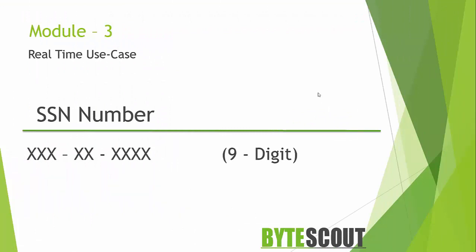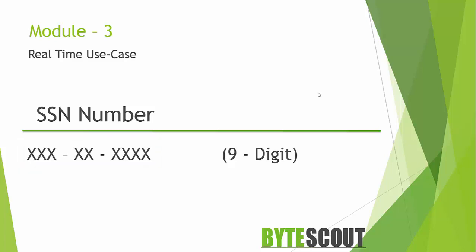Now let's move to the next demo. Suppose you need to check whether a user has entered a valid Social Security Number in your application. SSNs are 9-digit numbers in a specific format: the first 3 digits are called the area number, the next 2 digits are the group number, and the last 4 digits are serial numbers ranging from 0001 to 9999.